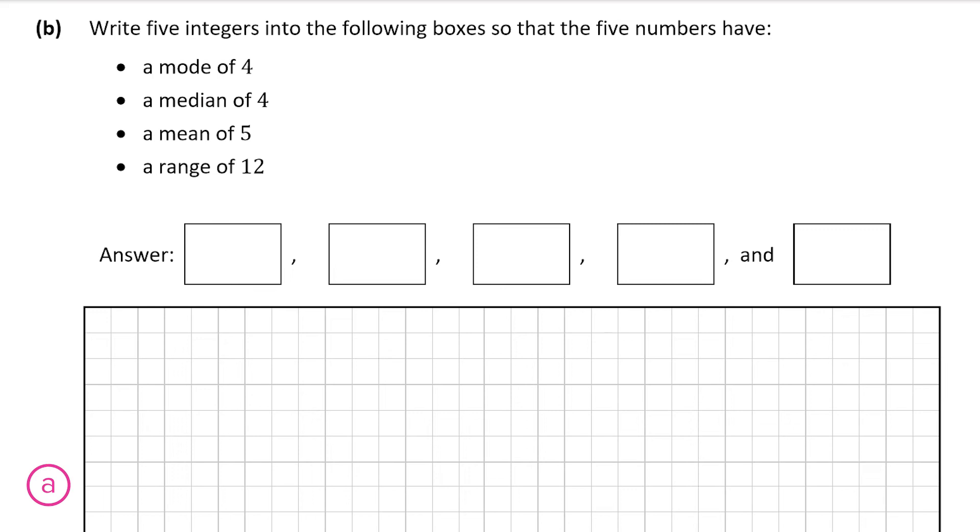So this time we're given a few more instructions. The mode is now 4, the median which is the number in the middle must be 4, it has a mean of 5 and then a range of 12. So the first thing we can do is the median is 4 which means the number in the middle here will be 4, that's the first thing we know now.